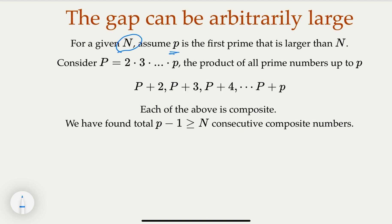We're going to have this product of all the prime numbers up to p: P = 2·3·...·p. This is a huge number—this is why the method is called Euclidean style. We claim that the sequence from P+2, P+3, P+4, up to P+p—all these numbers are composite.